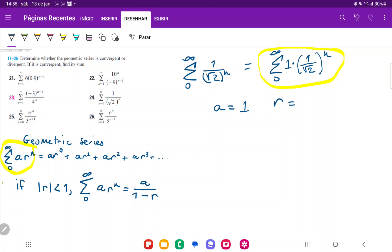And our ratio, the thing that's being raised, is 1 over square root of 2. Now, the absolute value of 1 over square root of 2 is definitely less than 1, because 1 over square root of 2 is about 0.7.